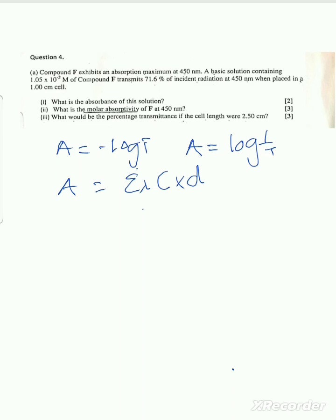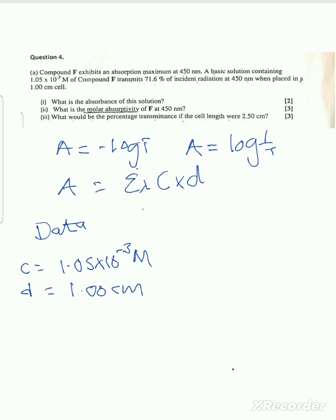Let's write out the data we have been given. The concentration is 1.05 times 10 to the power negative 3 mol per liter. The cell length is 1.00 centimeters. The percentage transmittance is 71.6 percent.